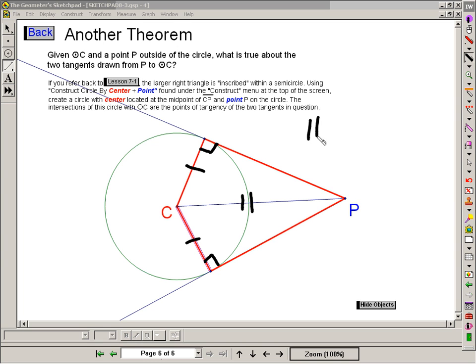So by the theorem hypotenuse leg, these triangles must be congruent. Therefore this segment is congruent to this segment by the idea of CPCTC. Corresponding parts of congruent triangles are congruent.